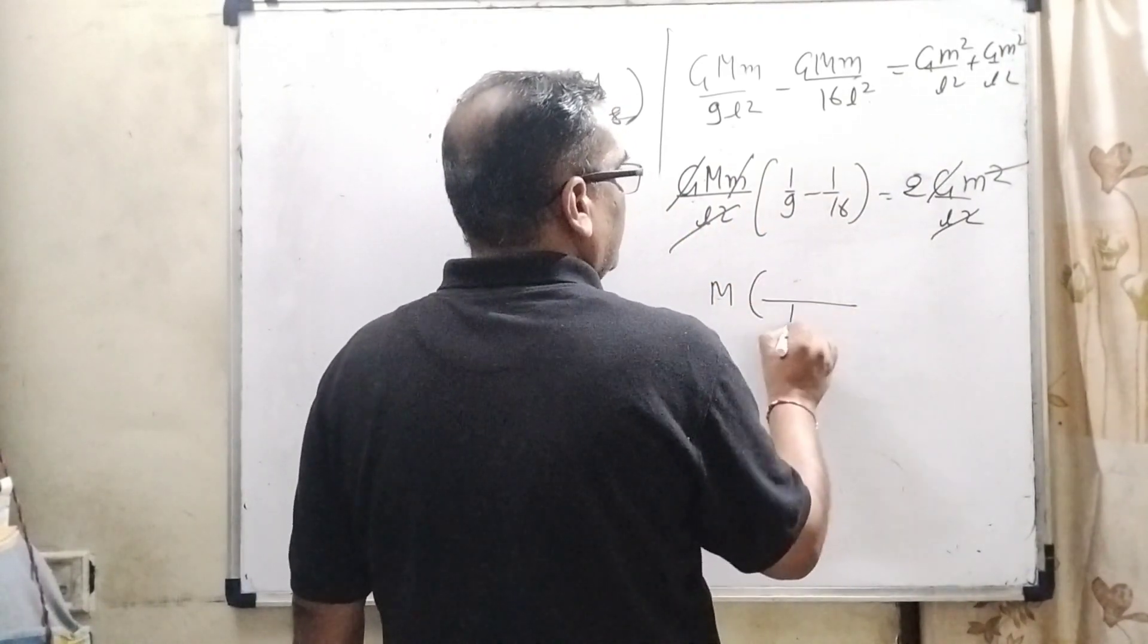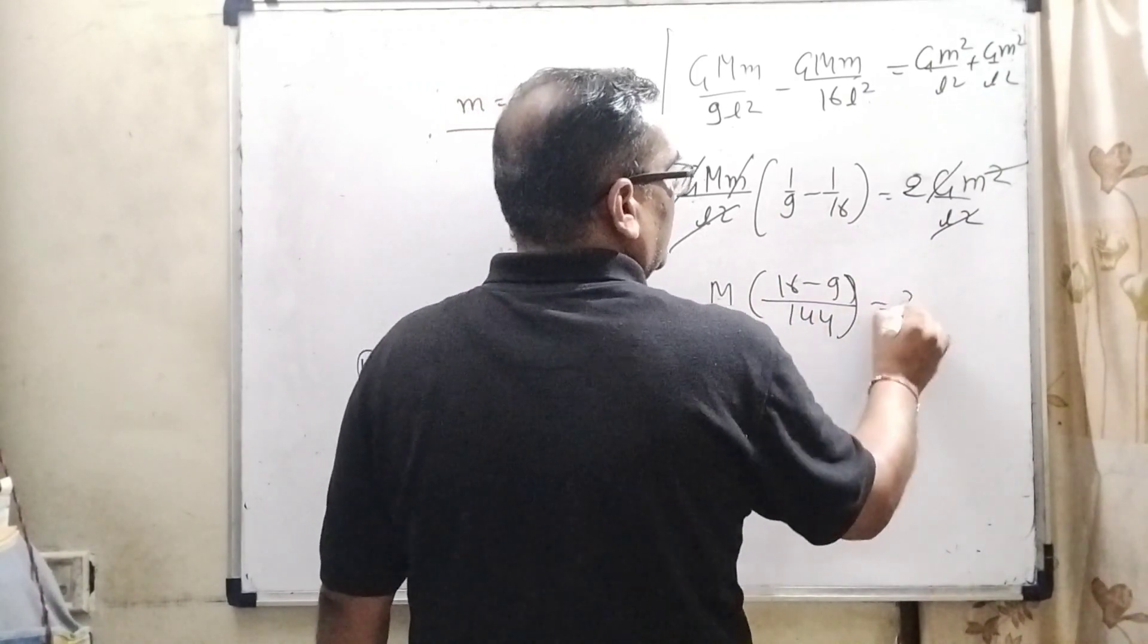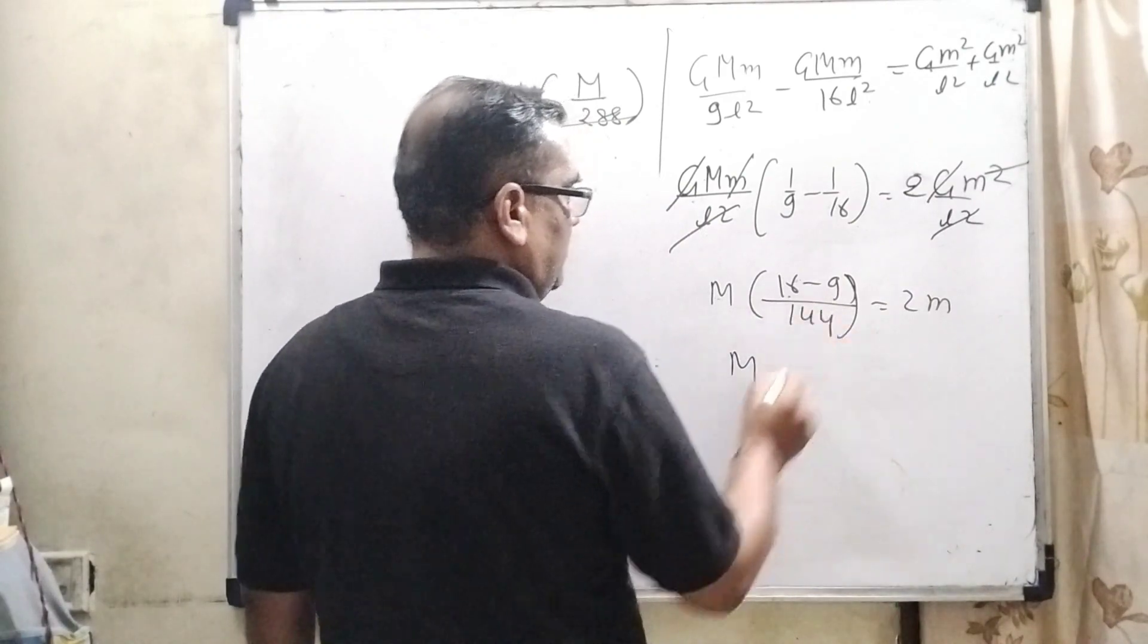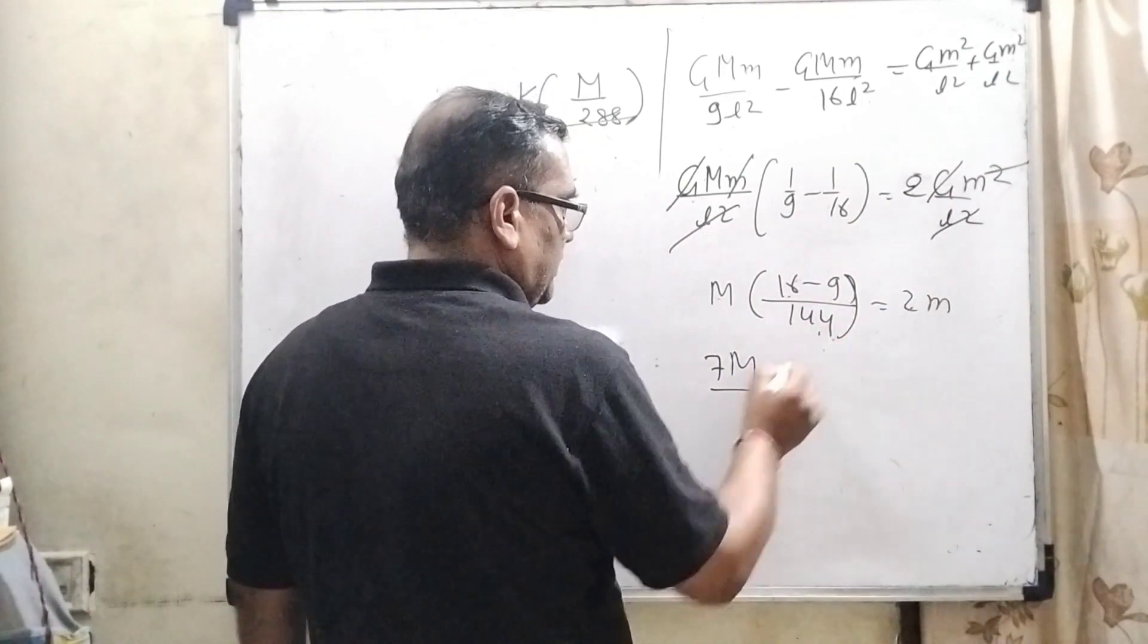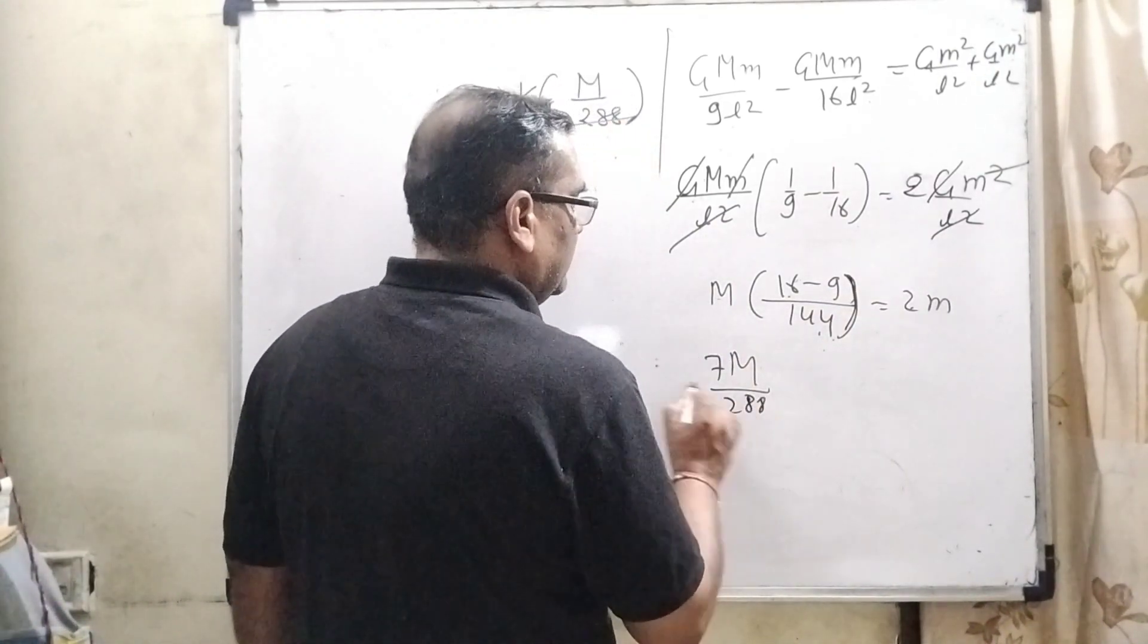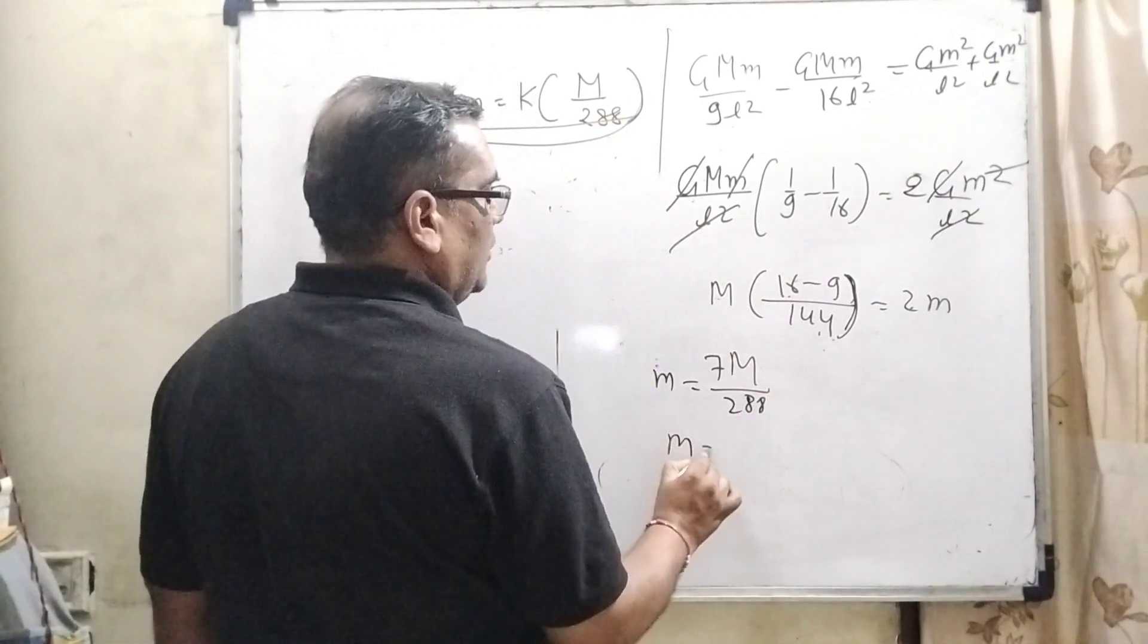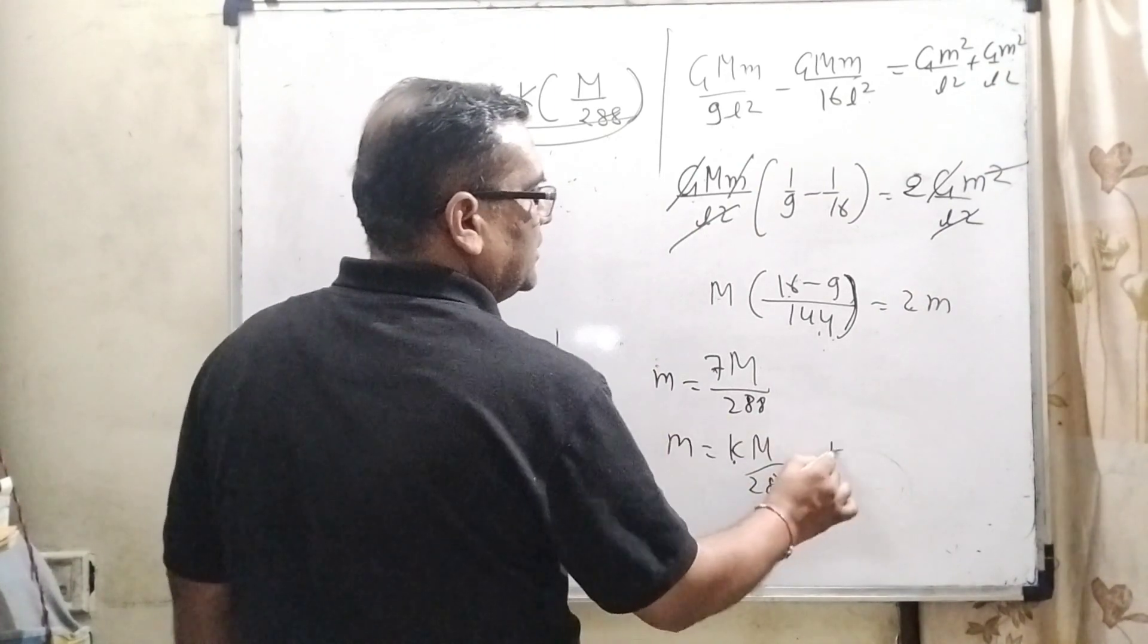M, taking the LCM 144, and 16 minus 9 means 7, equals 2M. So M equals 7 upon 144, and this 2 transposes and goes to the denominator, then it becomes 288 small m. Now compare with our given terms: M equals K capital M by 288. Now K equals 7. I hope you understood this problem. Thank you.